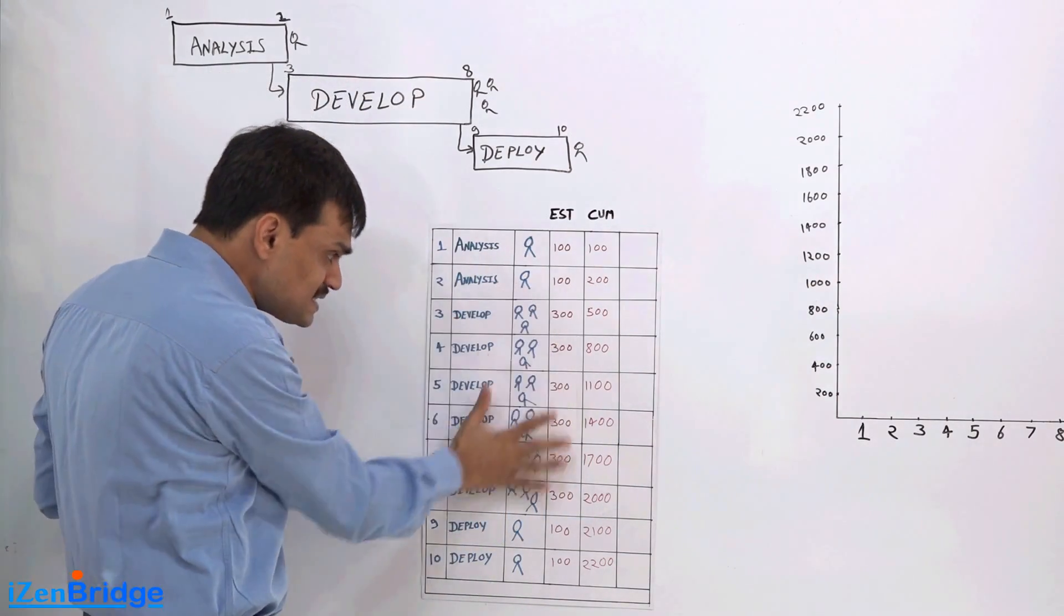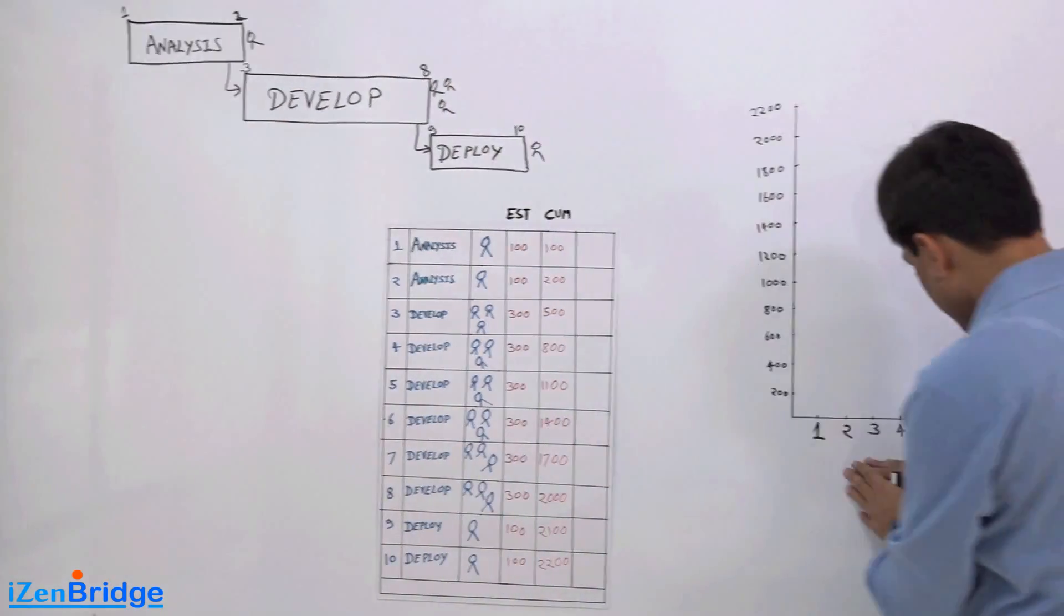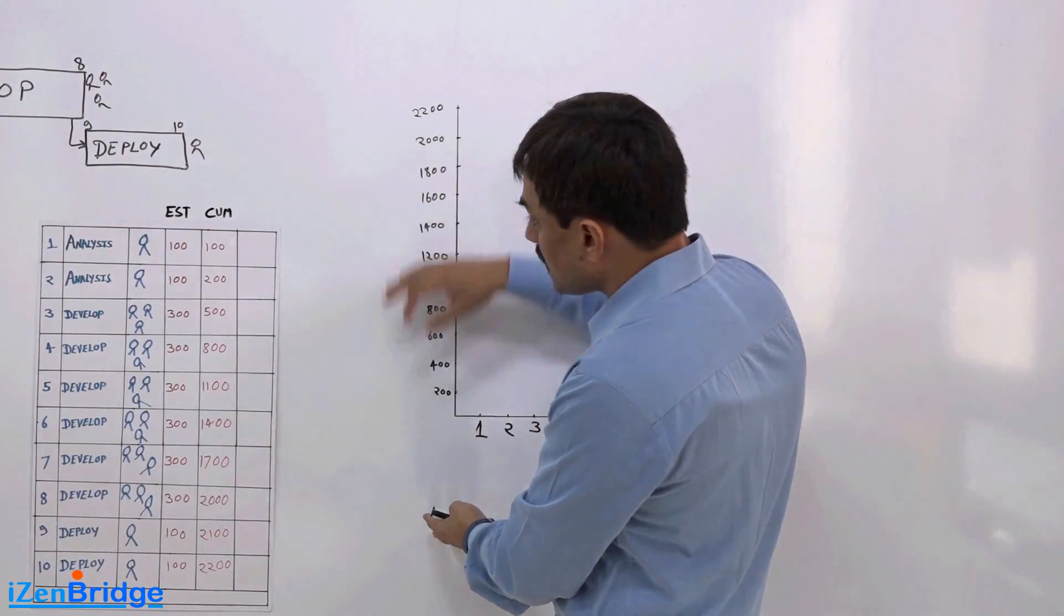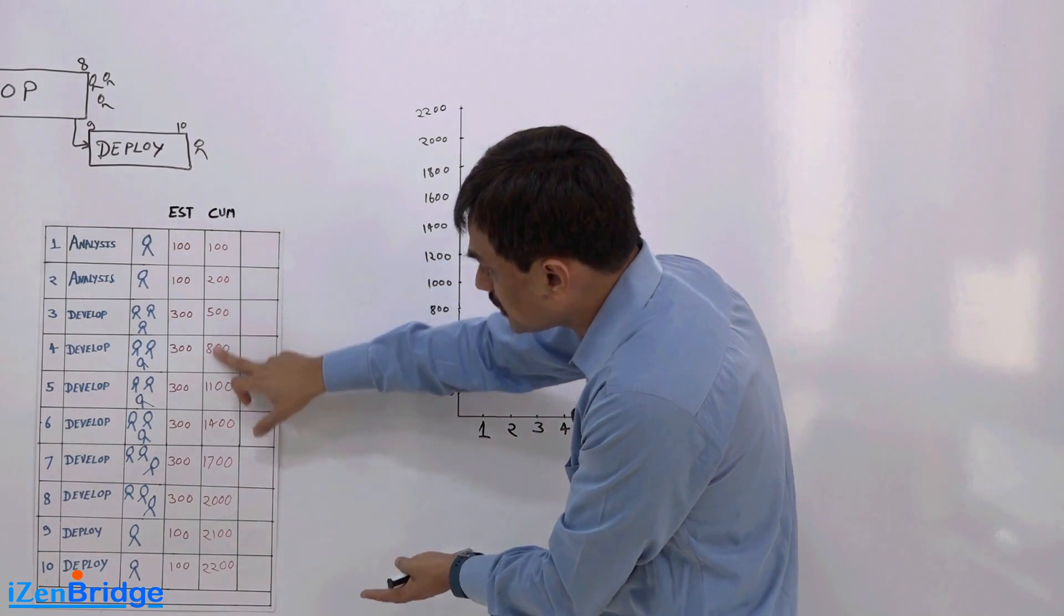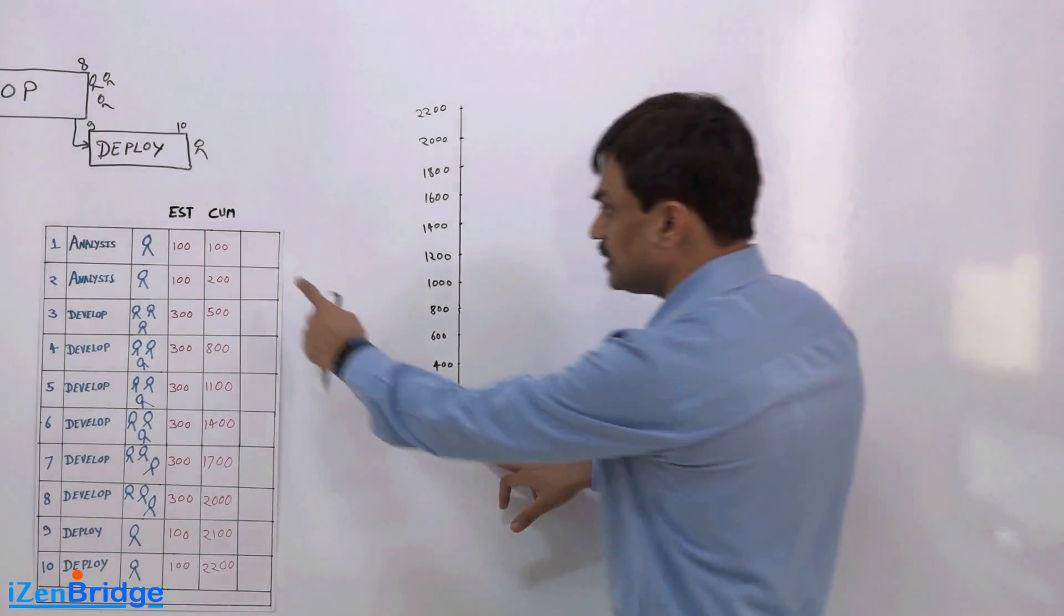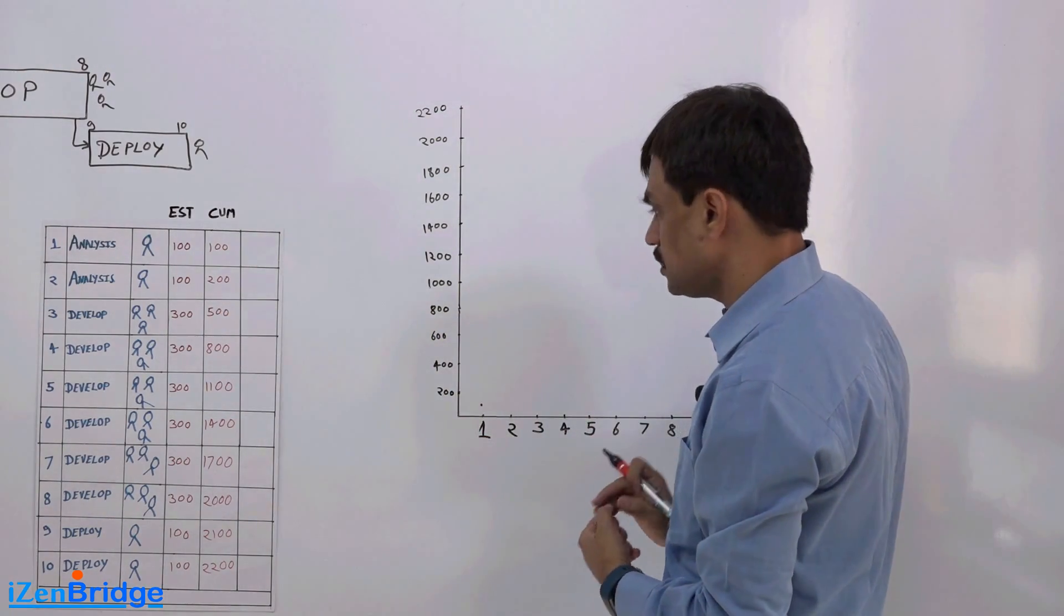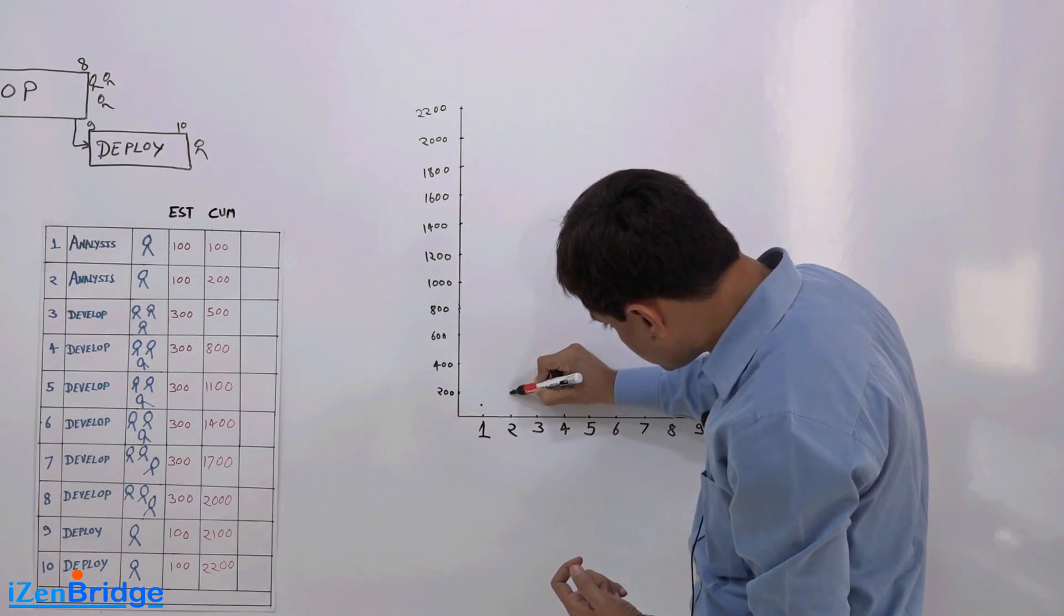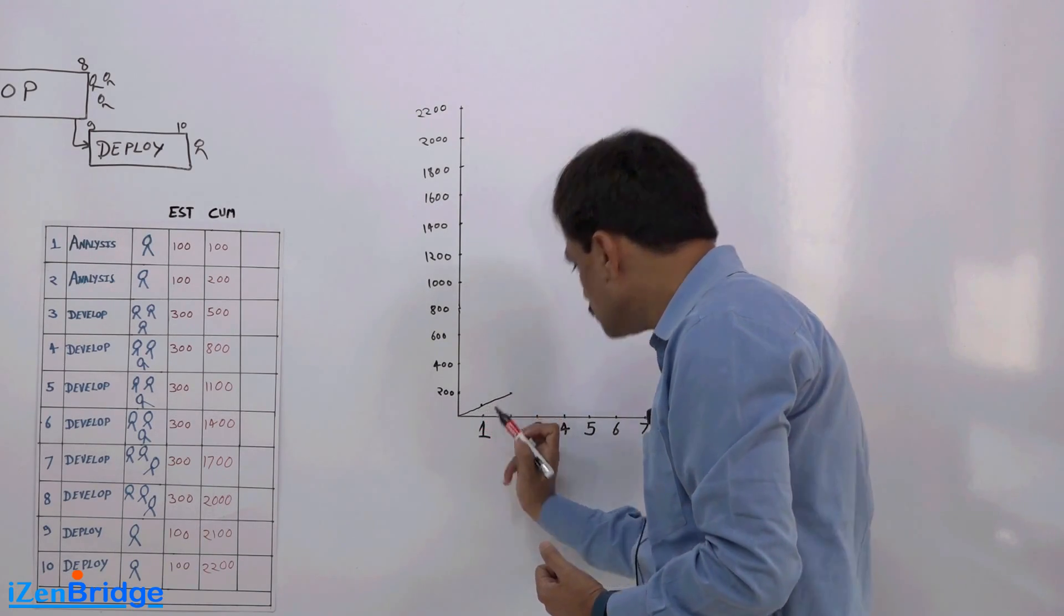Now if I put this thing on a graph where at one axis I have days like 1 to 10 and on another axis I have this cumulative estimate which is coming in this particular column. At the end of day 1 I'm done with $100. So I put 100 here, 1 dot. By end of day 2 I'm done with 200. So I put 200 here. This is like by end of 2 days.